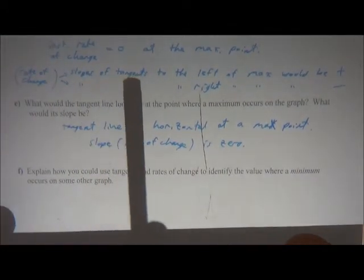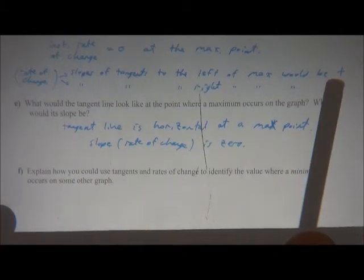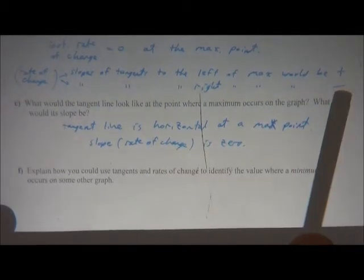Now what about if we had a minimum, how could you use tangents and the slopes of tangents around a curve to determine where a minimum occurs? If you were just given a bunch of information about slopes of tangents, where they're positive, where they're negative, et cetera, how could you tell where a minimum occurs? So let's take a look at where the maximum occurs, what happens with the slopes of tangents. So the tangents to the left with the maximum, and the tangents to the right with the minimum.